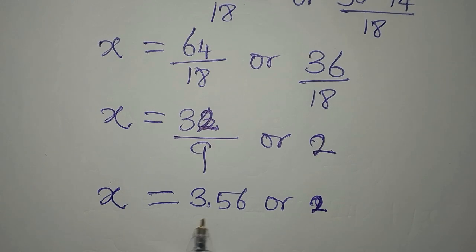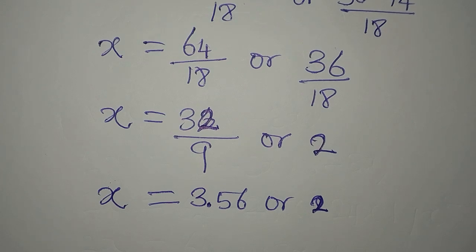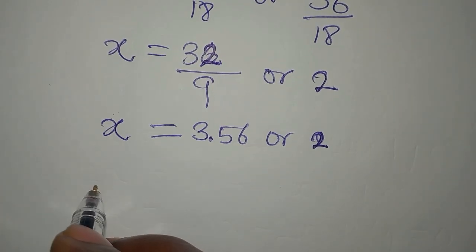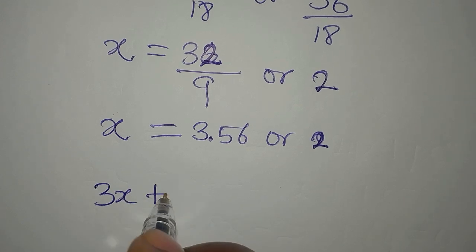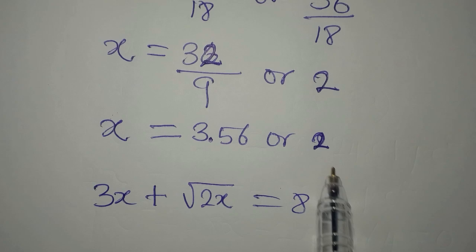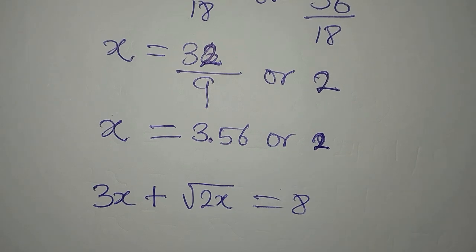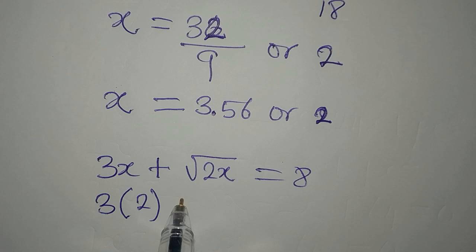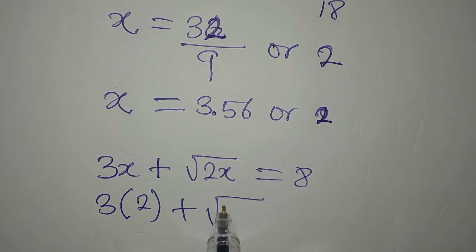Both of them here are positive. And definitely, both of them will not satisfy the equation. The equation is 3x plus square root of 2x equals 8. It's obvious that 2 here is the solution. If we put 2 here, we have 3 times 2 plus square root of 2 times 2.